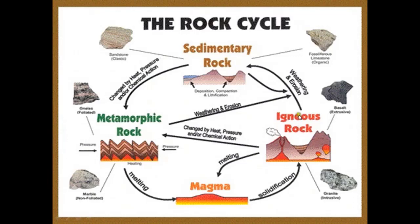So the rock cycle goes from igneous to sedimentary, sedimentary to metamorphic, and metamorphic back to igneous. Weathering and erosion produces sedimentary rock from both igneous and metamorphic sources. Heat, pressure, and chemical reactions convert sedimentary rock into metamorphic rock. Metamorphic rock melts into magma, and upon solidification that magma becomes igneous rock, continuing the cycle.